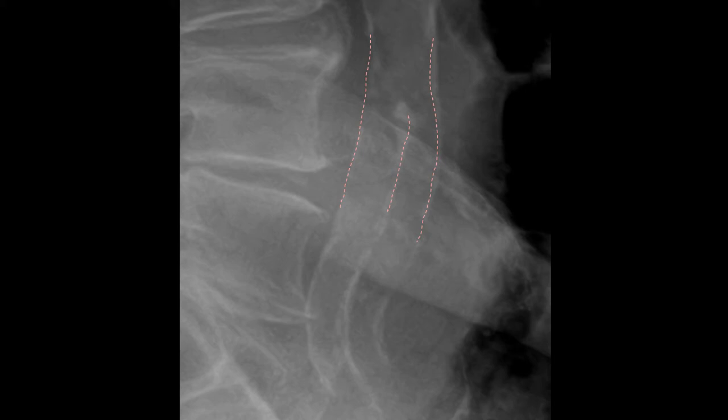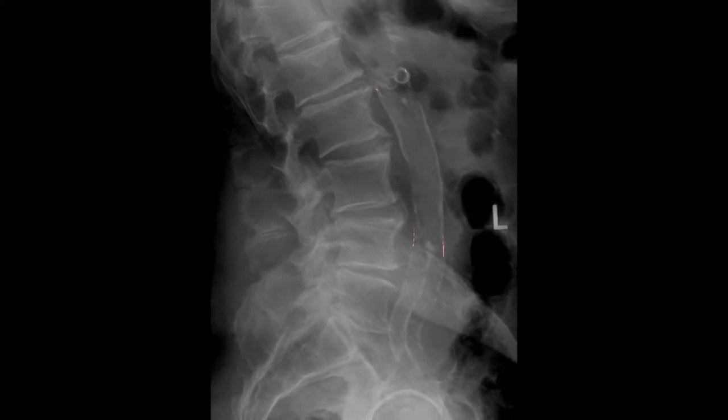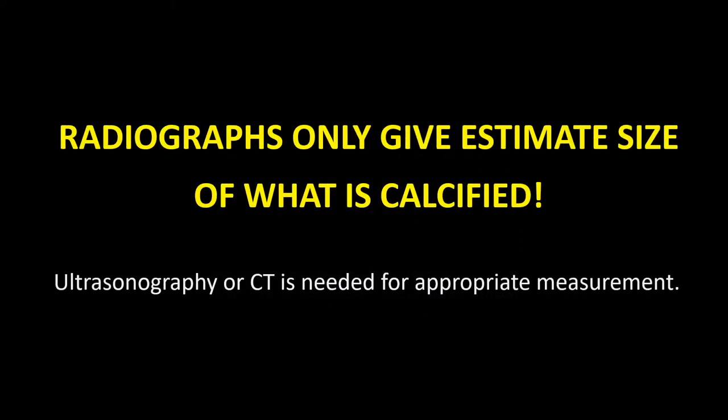We can see both the left and right common iliac arteries. The most common location to see an abdominal aortic aneurysm is infrarenal and superior to the bifurcation of the common iliac arteries. Remember, radiographs only give an estimate of the size of what is calcified.